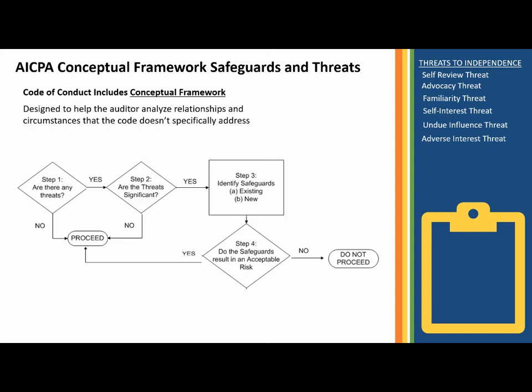An adverse interest threat arises when your client sues you or you sue your client — either way, you can't be an objective party for the audit. Finally, the management participation threat is where your firm acts as CFO or makes management decisions for the client. That's similar to the self-review threat in that you can't audit objectively if you've made many of those decisions.